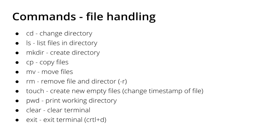Then we will list the files in a directory, create a directory, copy files and move them, remove files and directories, and create new empty files — which can be useful in some cases. Then we'll print out the working directory to see where we are currently located, and how we can clear the terminal so we don't see all the previous commands, and how we can close the terminal.